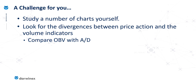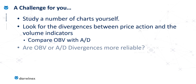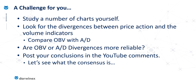I'd like you to study a variety of different charts — maybe forex, stock indices, commodities — and go through this comparison of OBV with accumulation distribution. Come to your own conclusion: which do you think provides the more reliable signals? If possible, post your conclusions in the comments of this YouTube video, and let's get a much wider consensus across all of the viewers as to which of these appears to be the best.